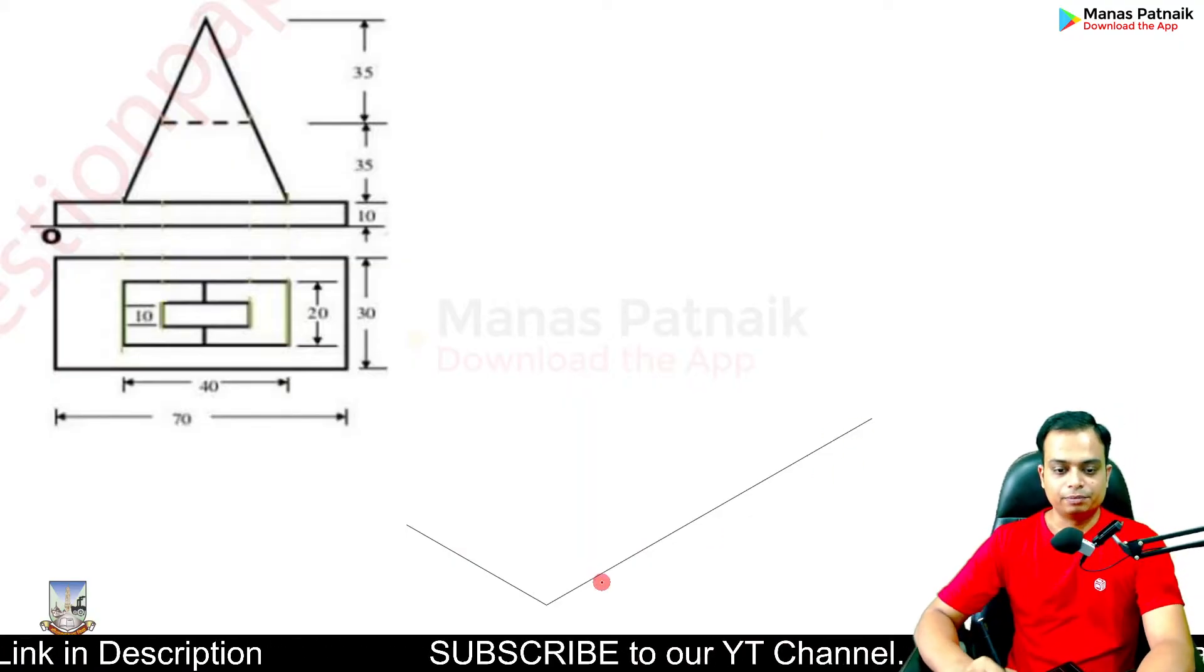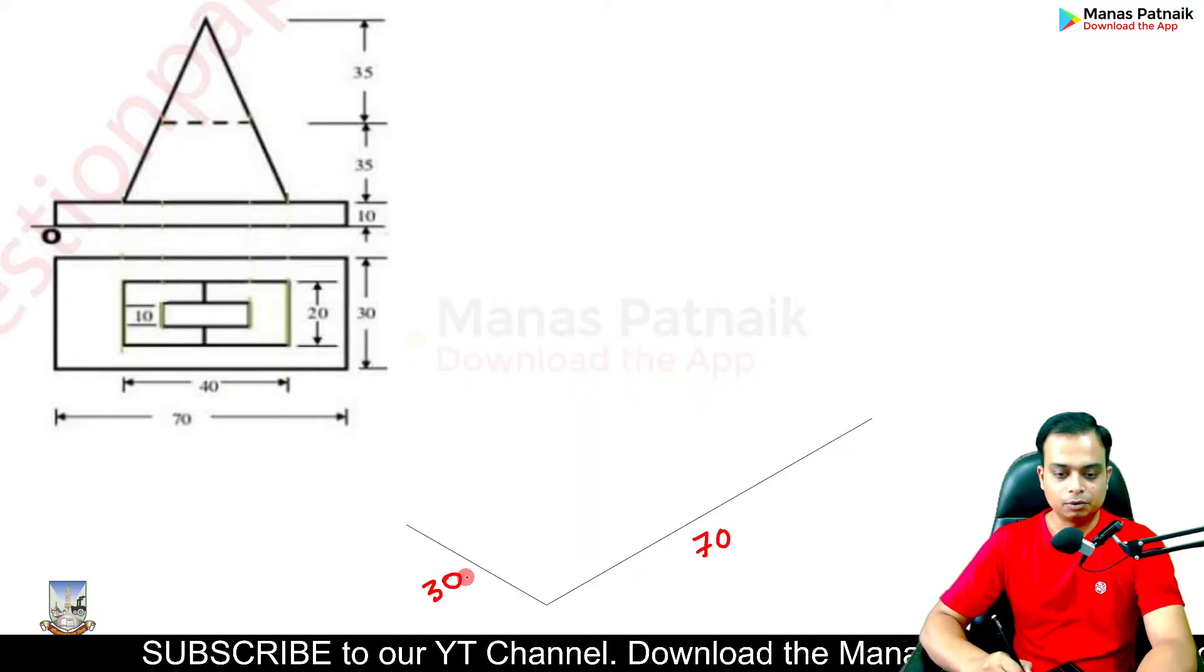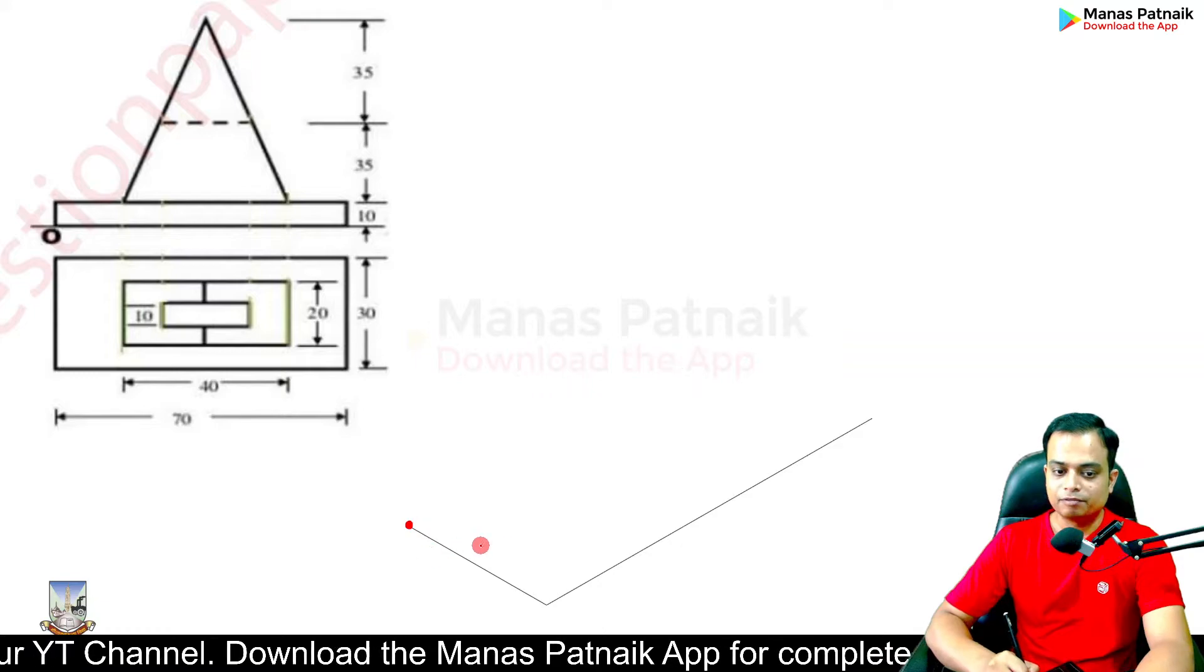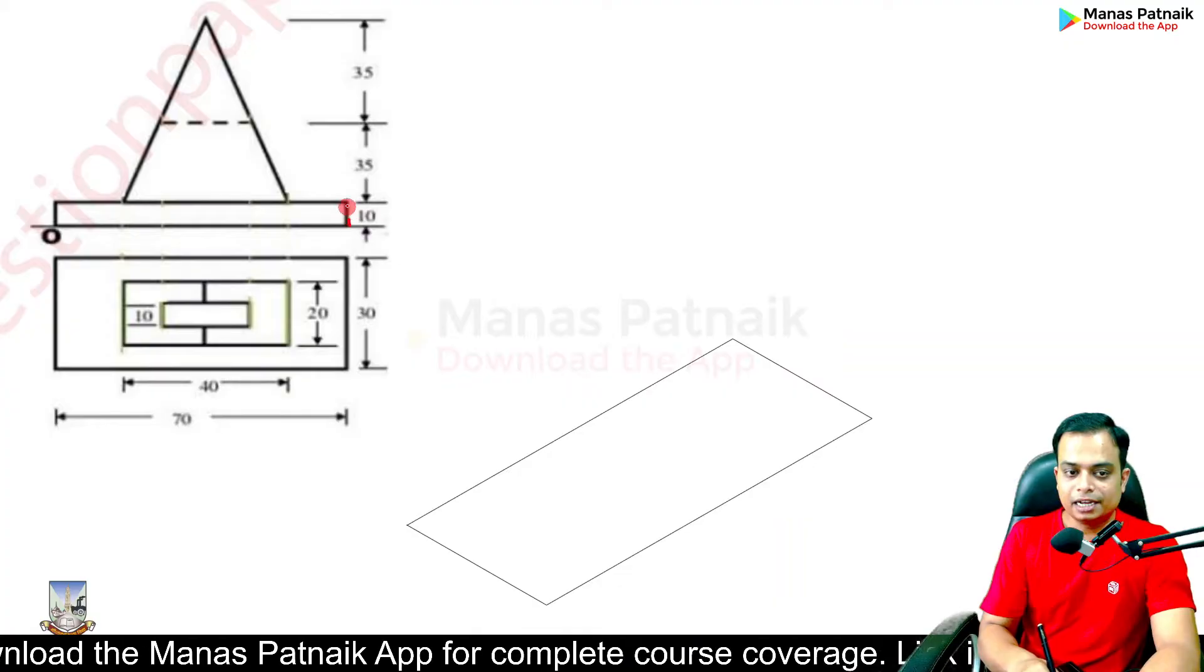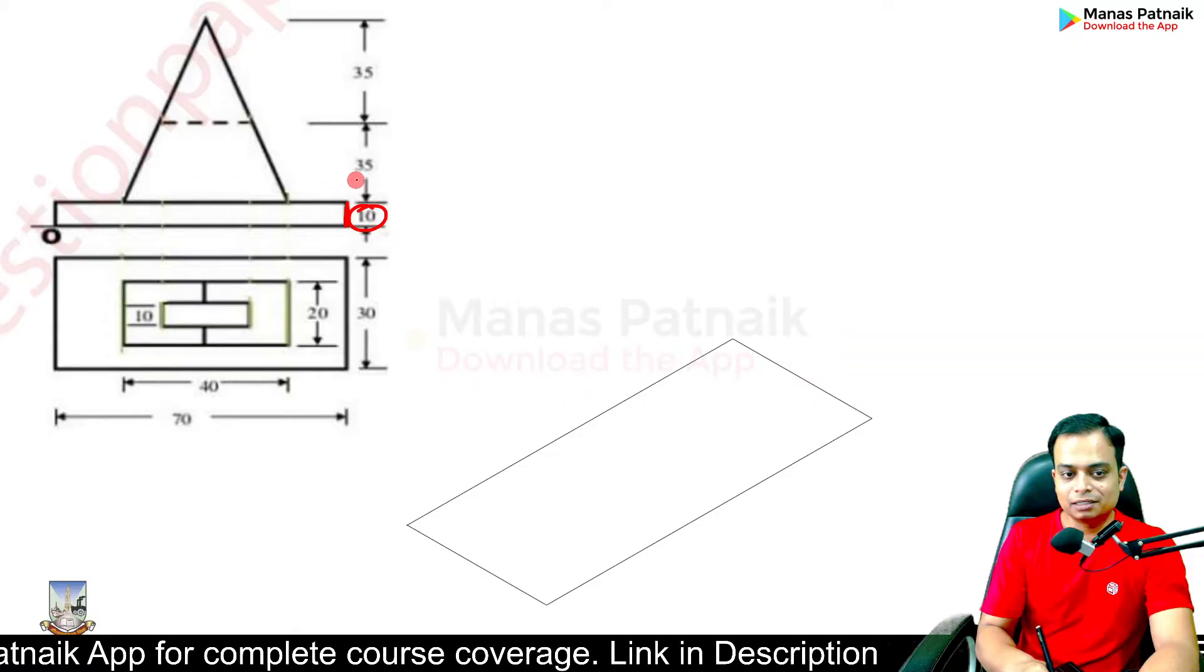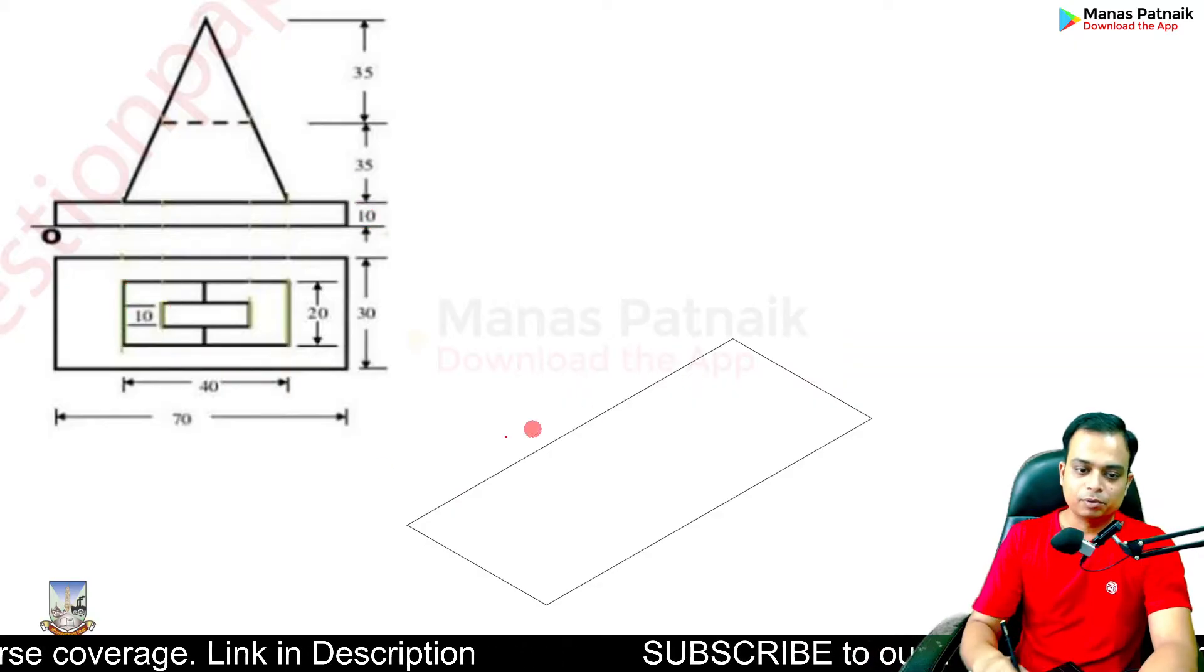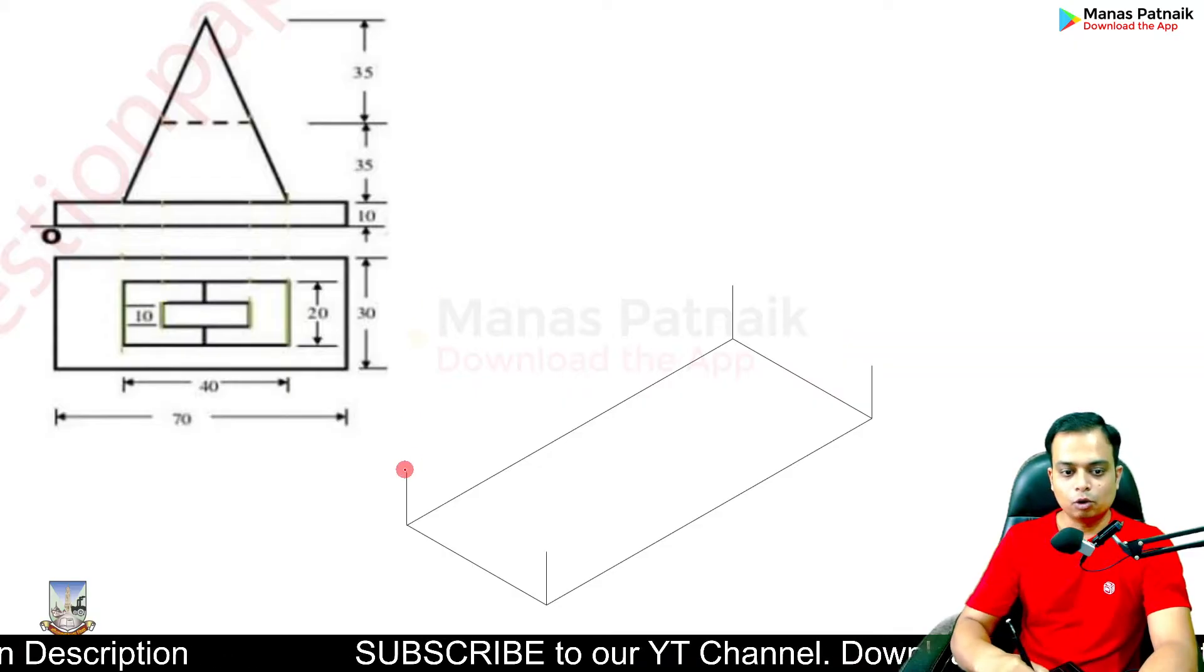So how should we proceed from here? This is 70, this is 30, done. Now keep your drafter parallel to this line, tighten the screw, bring it over here and draw a line in the same fashion. The height has been given as 10 millimeters, so we are going to initially build this platform and once this platform is created, I'm going to then go for this profile.